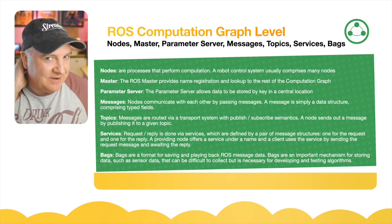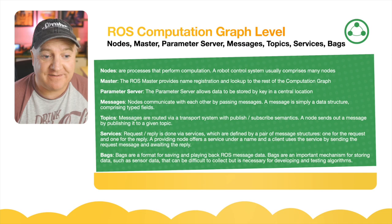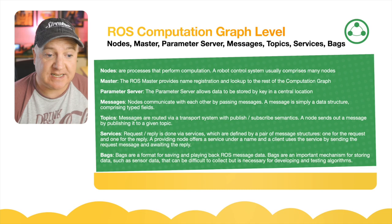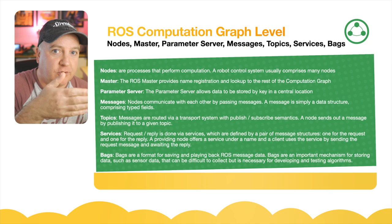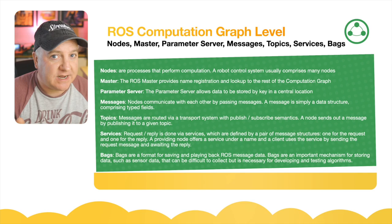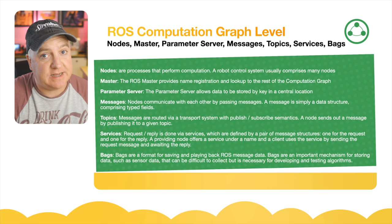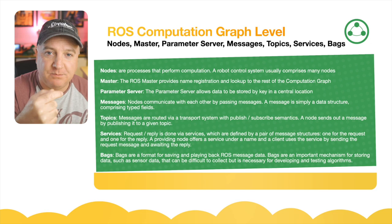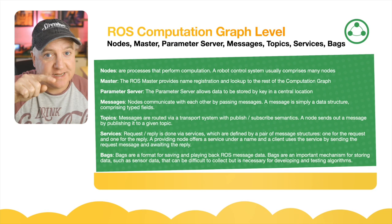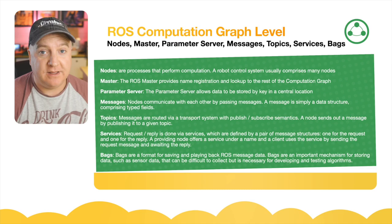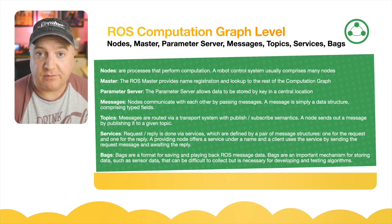A bag is a format for saving and playing back ROS message data. If we have a range finder on a servo sweeping around to map a room, it might be difficult to replicate that scenario many times. We could record it once and try out different algorithms with that same data set. All the angles, distance measurements, and timestamps are captured in real time along a timeline. The bag saves that in a file format that can be played back as if it was happening for real - really helpful when testing.